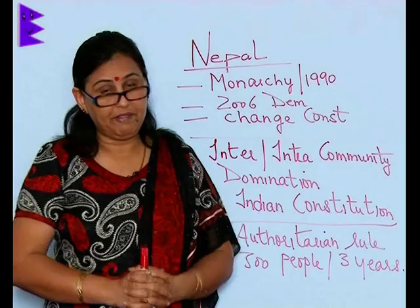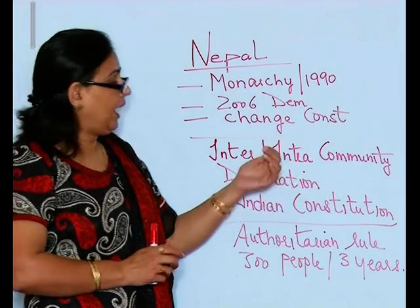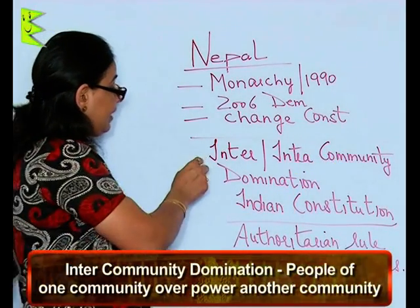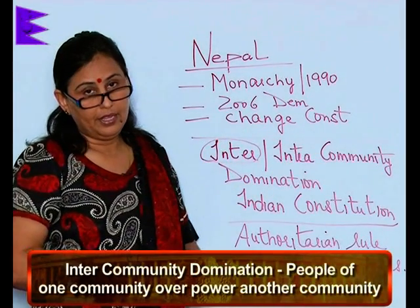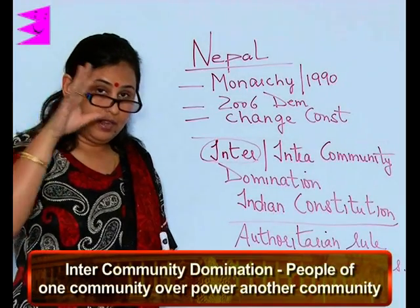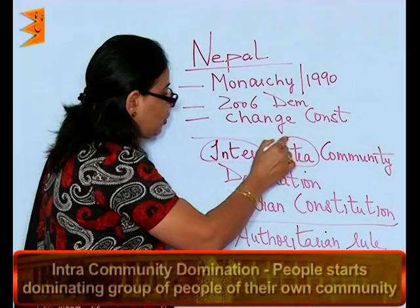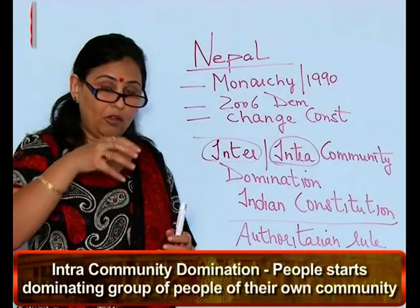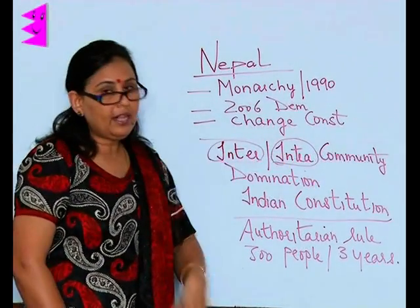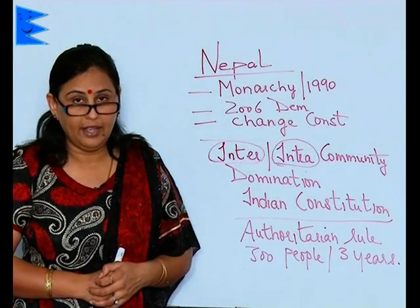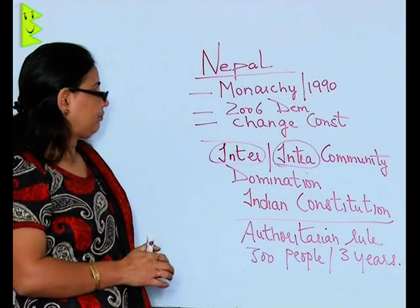Now let's talk about something prevalent in countries like India too — inter-community domination and intra-community domination. Inter-community domination is when people of one community have a hold over another community and overpower them. Intra-community domination is when people within their own community start dominating another group of that same community — that is, certain people within the community become powerful enough to dominate their own community members.